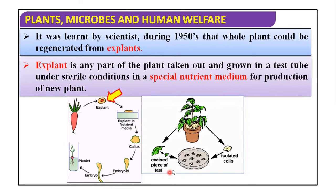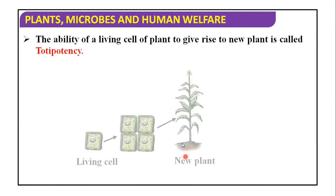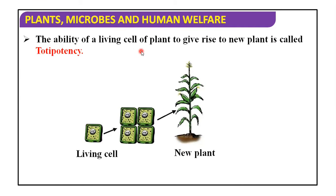We can take the leaf portion or isolated cells from the plant and culture them in the nutrient medium. The ability of a living cell of the plant to give rise to a new plant is called totipotency. The living cell which can multiply and develop into a new plant — that capacity is known as totipotency, which helps increase plant production.